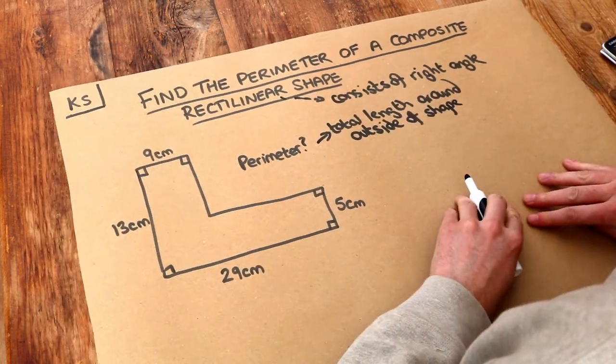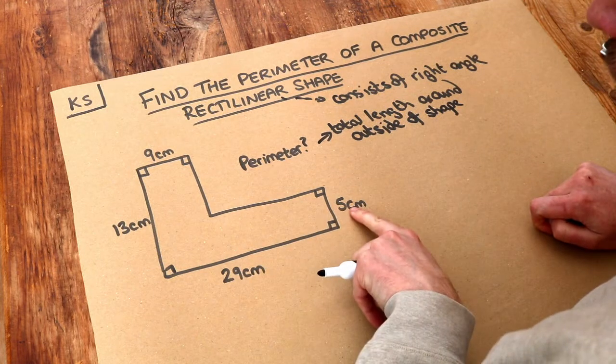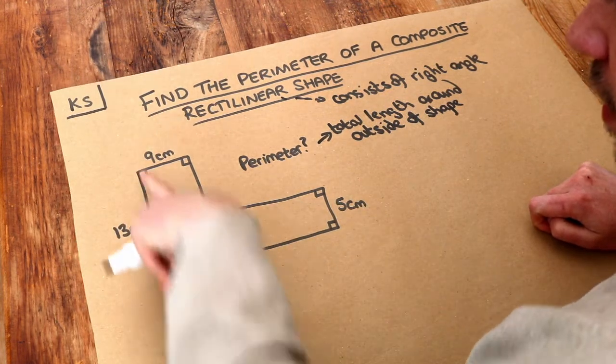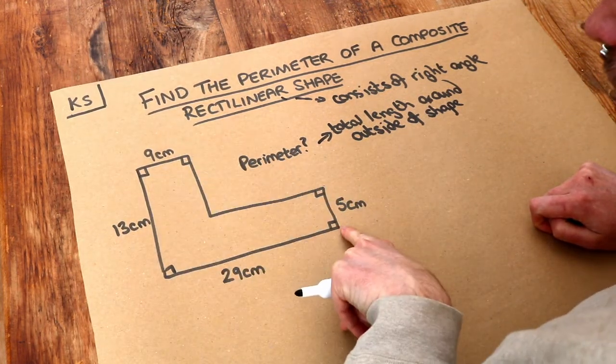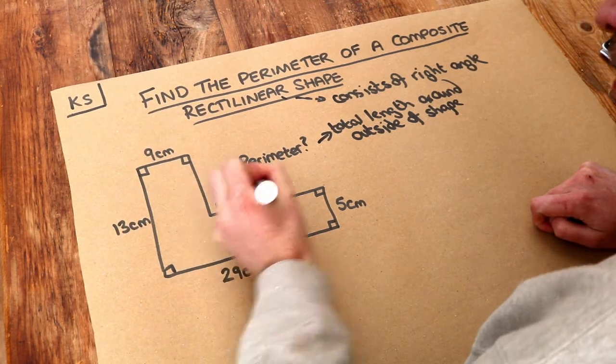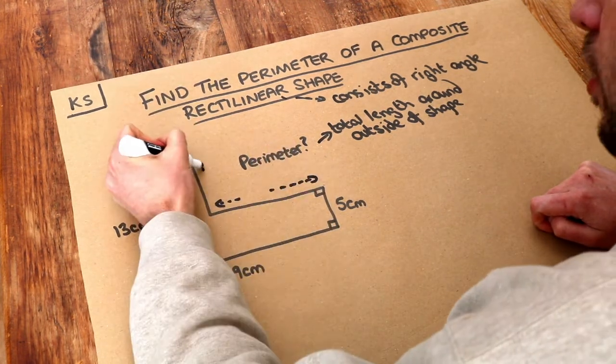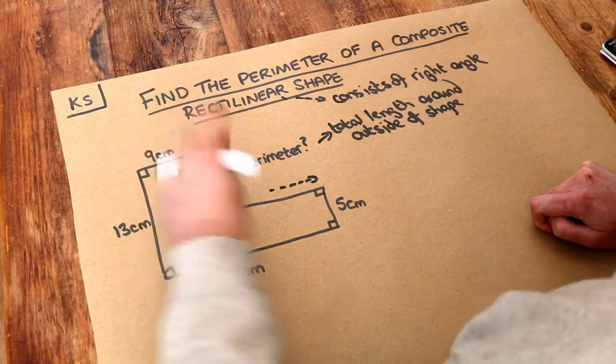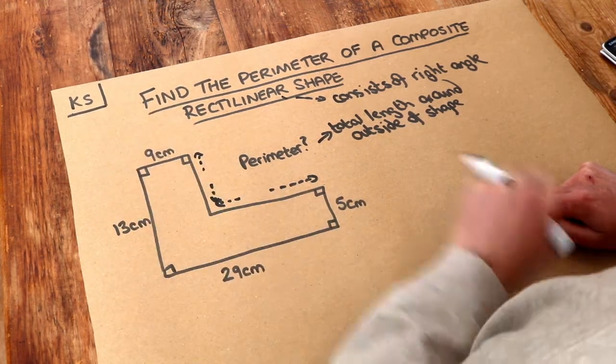Now there's two ways to do it. One way to do it is to actually work out what the unknown lengths are. So we know what this length is, we know what that length is, we know what that length is, we know what that length is. But we don't know this length, and we don't know this length. And we need those two lengths if we want to add up all the lengths to get the total perimeter.